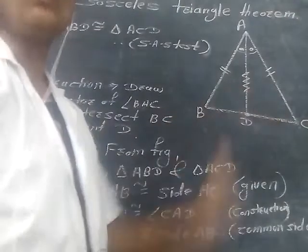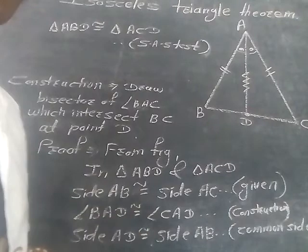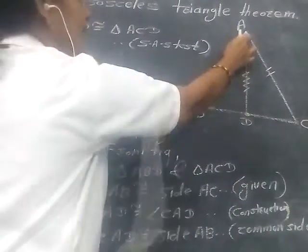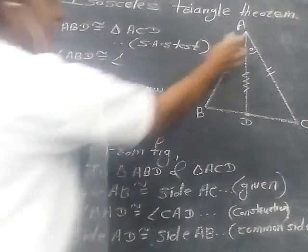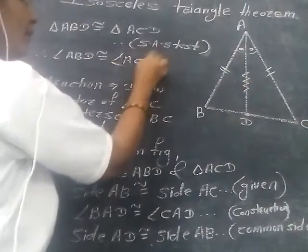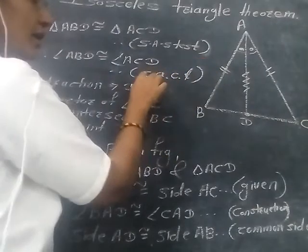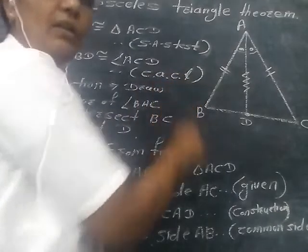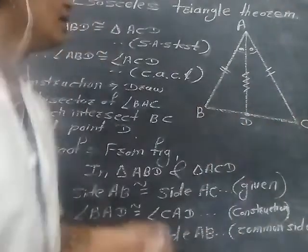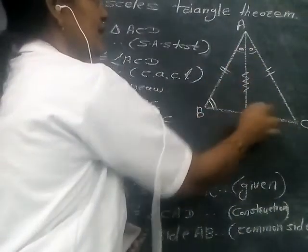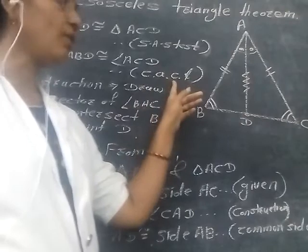These two triangles are congruent, and if two triangles are congruent, then their corresponding parts are also congruent. So we can write: therefore angle ABD is congruent to angle ACD. Because these are corresponding angles of congruent triangles — CPCT. This means angle B is congruent to angle C.